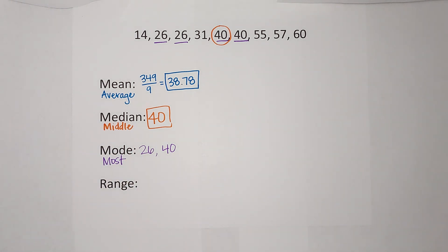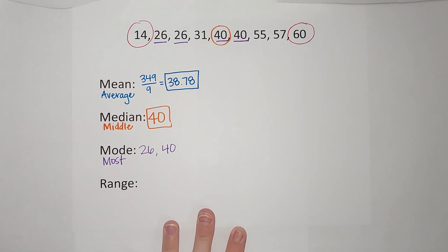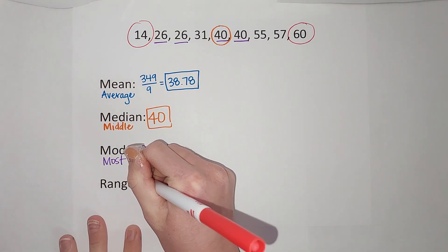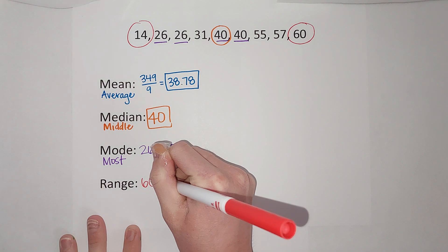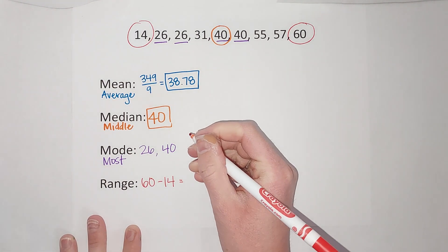Last one, the range. The range is when I take my highest number and I subtract the lowest number. So the range is going to be 60 minus 14, and when I do that I get 46.